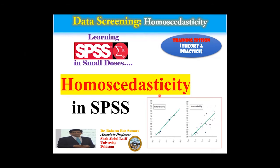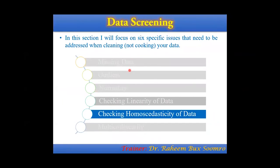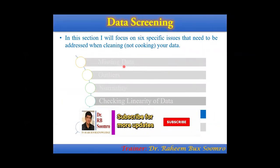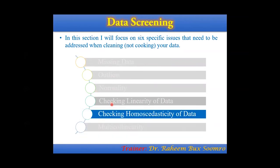In this video, I will first provide some conceptual background on homoscedasticity, and then we will check it practically in SPSS. My videos are always short because I believe in learning in small doses. Earlier videos on my YouTube channel cover missing data, outliers, normality checking, linearity, and multicollinearity. In this video, we are discussing homoscedasticity.